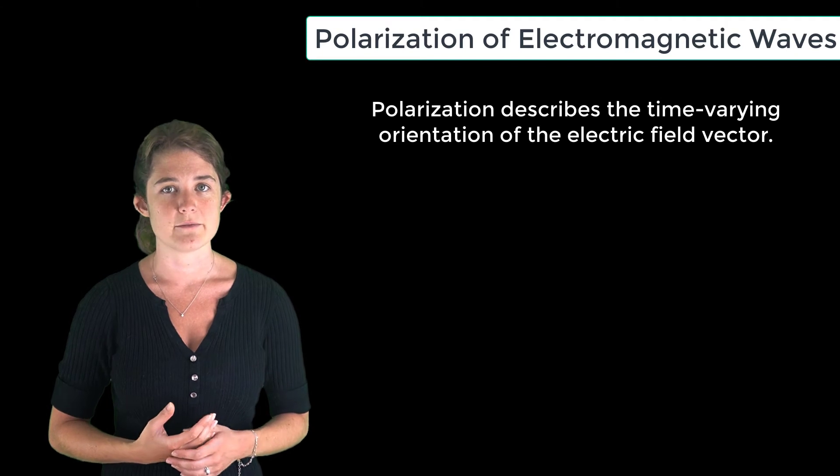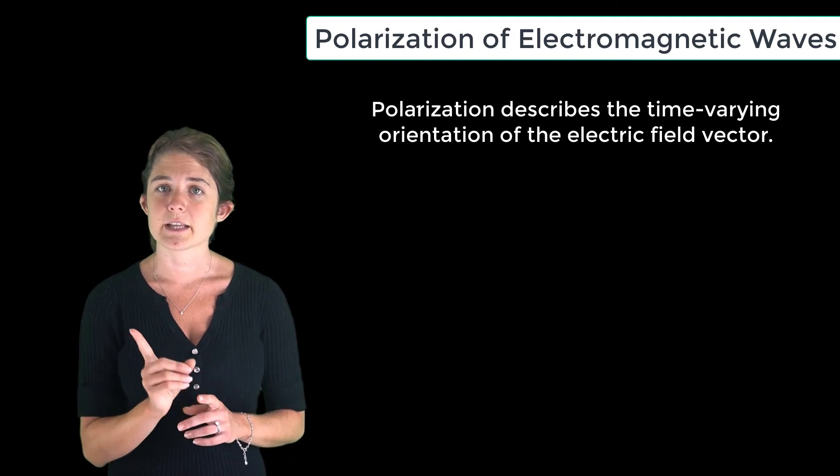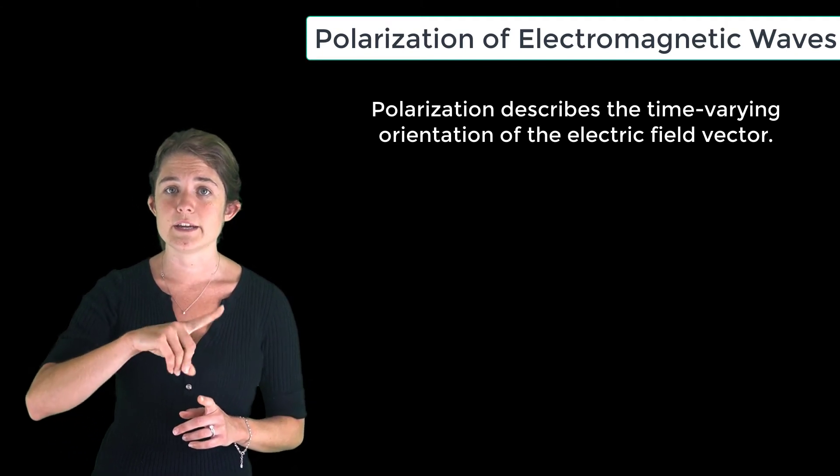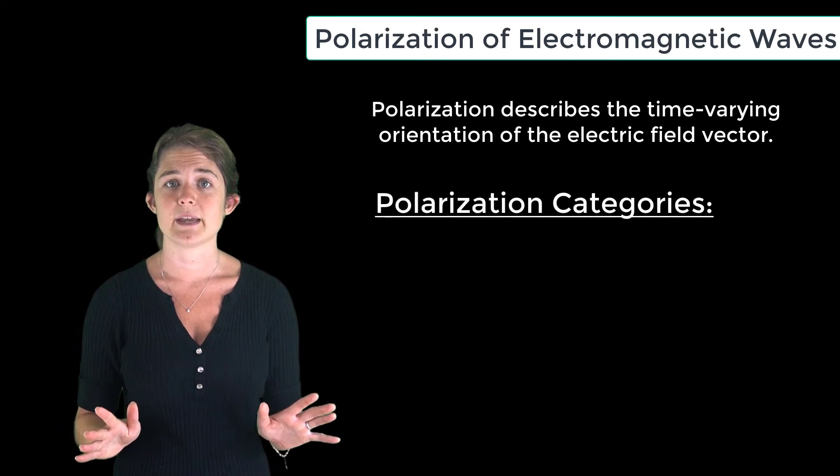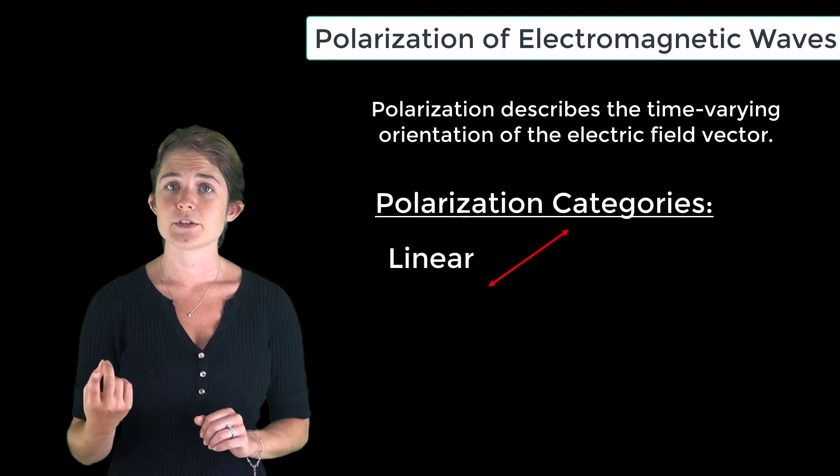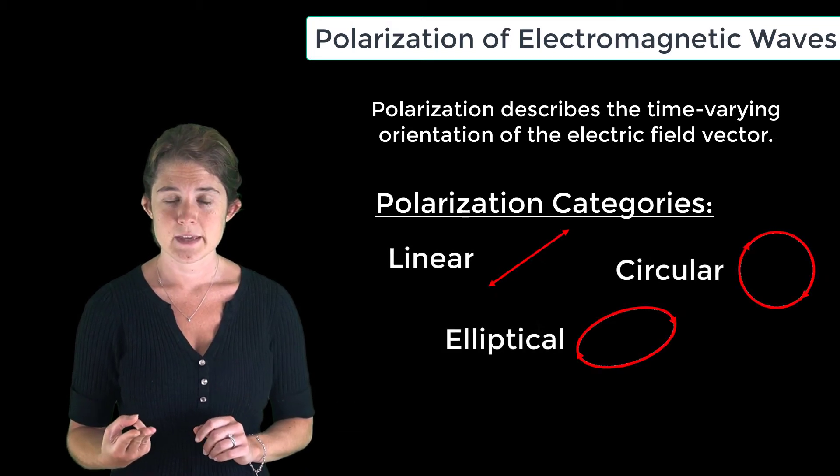to describe the behavior of a wave over time. Specifically, we look at the time-varying orientation of the electric field vector. All plane waves have polarization that can be categorized as either linear, circular, or elliptical. These names describe